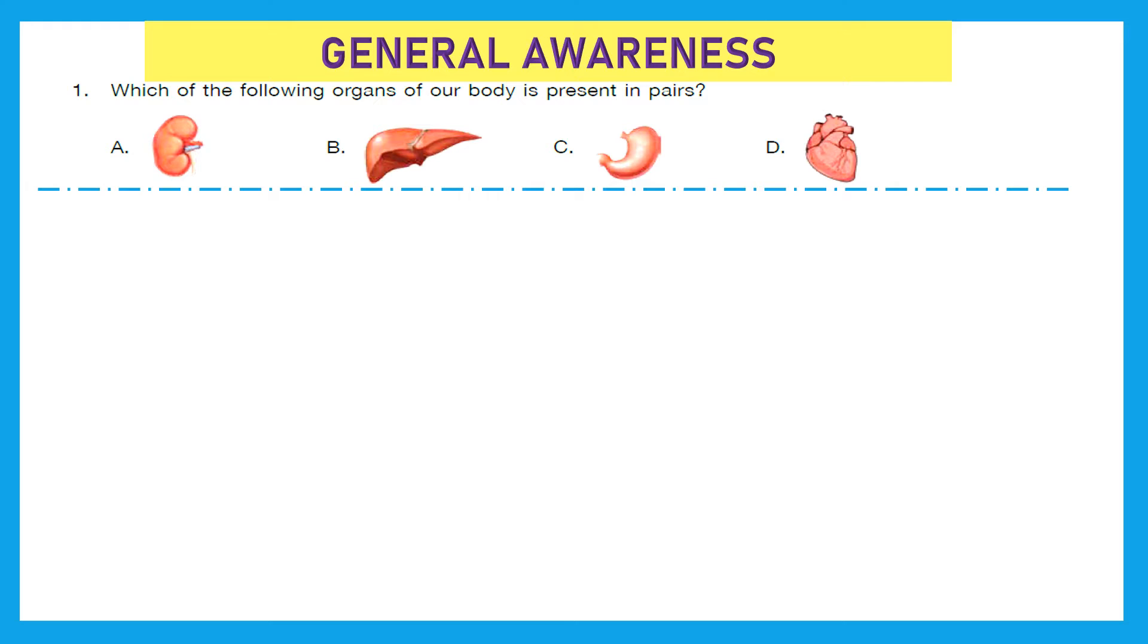First section is general awareness. Question 1: Which of the following organs of our body is present in pairs? In pairs means two in number. A. Kidney, B. Liver, C. Stomach and D. Heart. And the right answer is A. Kidney. We have two kidneys in our body.